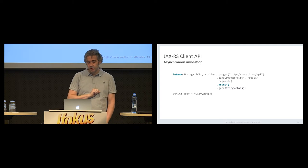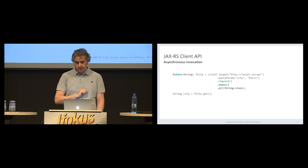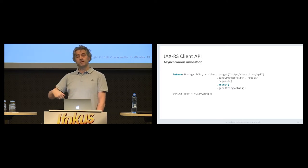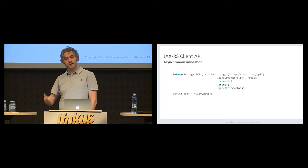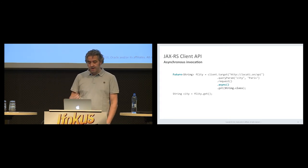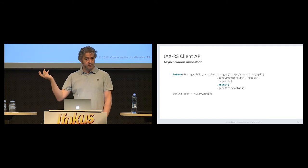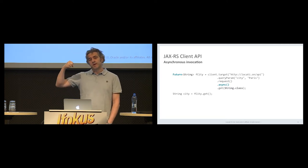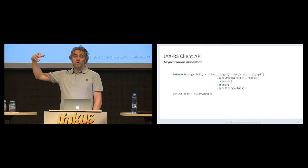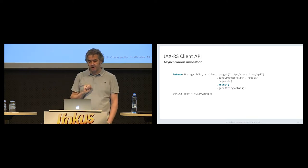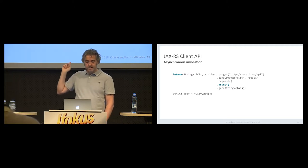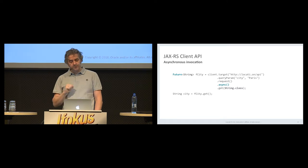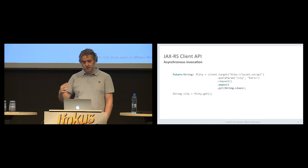In JAX-RS 2, we also added asynchronous capabilities. Using the async invoker, you tell the JAX-RS client container that this is an asynchronous request. The return type of that invocation is a Future object — an object you can use at some point in time to get the result from the remote endpoint, or the error thrown during the request. However, as soon as you call get on a Future object, you're basically blocking again. So we haven't really solved the blocking issue with that approach.